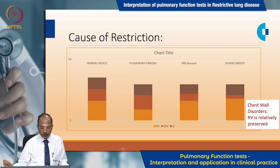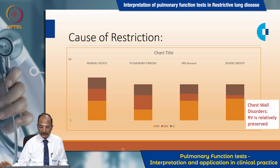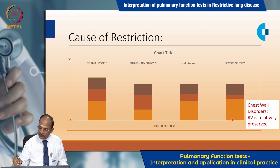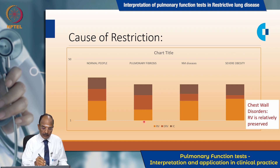This chart shows the various possibilities with conditions like pulmonary fibrosis, neuromuscular diseases, and severe obesity. There are varying degrees of variation in residual volume: residual volume is increased in severe obesity and neuromuscular diseases, whereas in pulmonary fibrosis it is reduced compared with normal people.